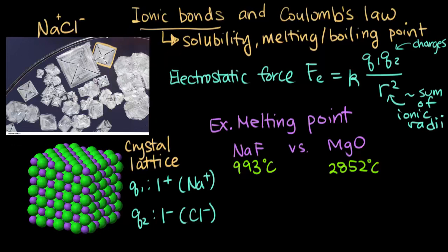They're not exactly the same, but they're pretty close. So if we were to say that R is approximately the same for these two, then we can explain the difference in melting points using the charges. Since melting point is a measure of basically how much energy you need to add to break apart your ions, we would expect melting point to increase as Fe increases. As the force between the ions increases, we would expect to have to add more energy to break those ions apart.